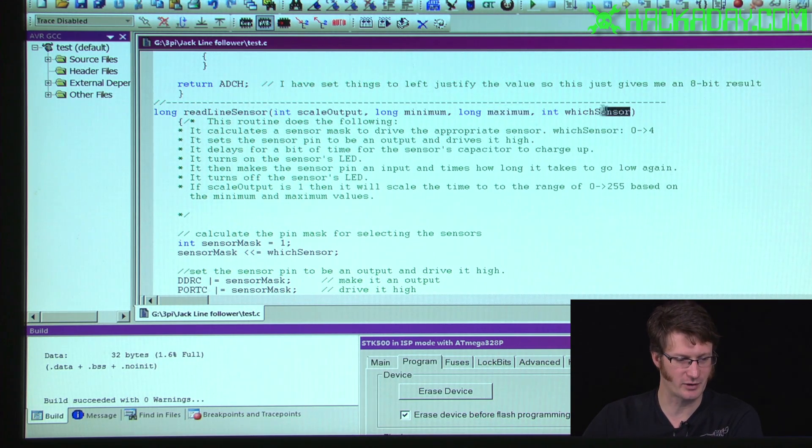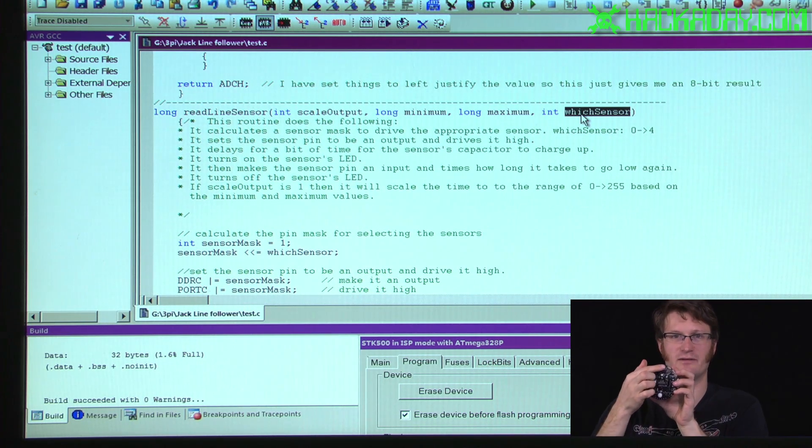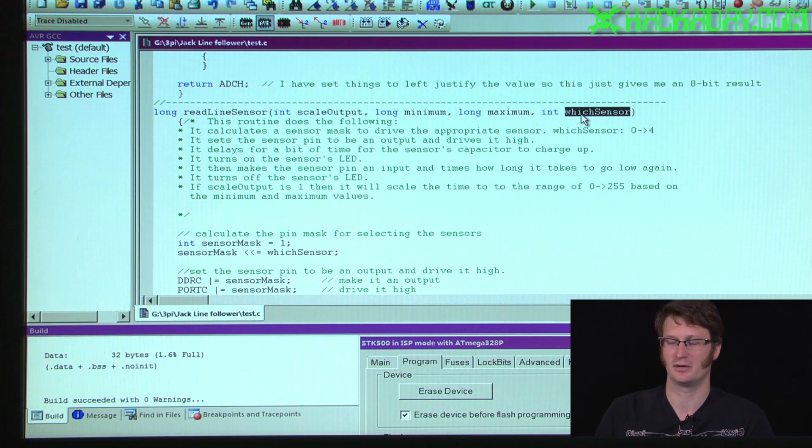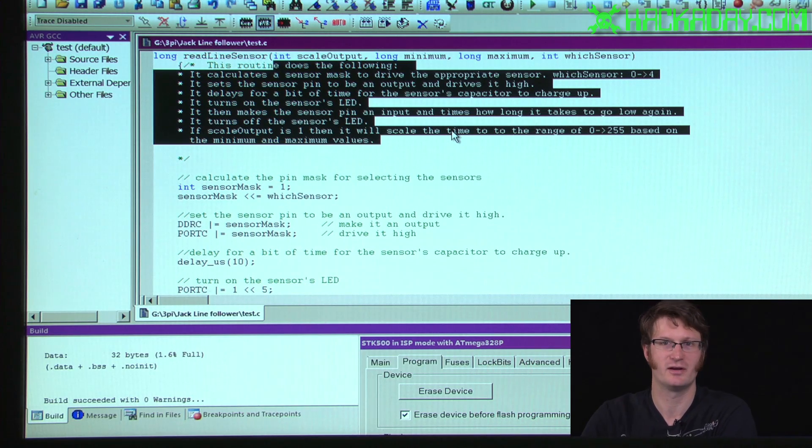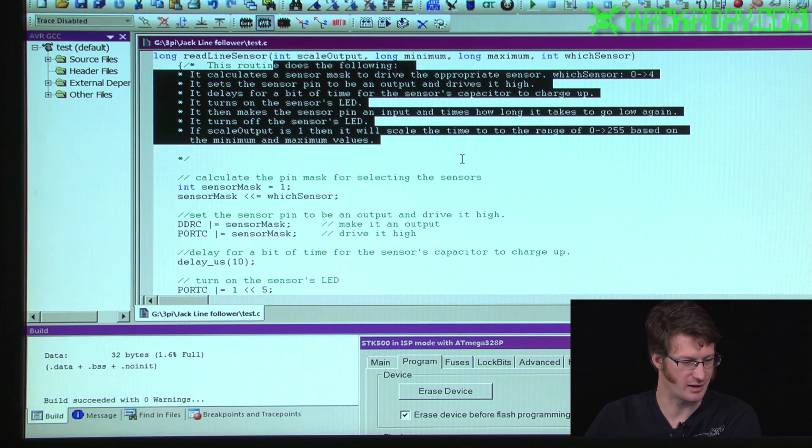And then I have one more argument that says which sensor. And that lets you select which one of these little line sensors you want to read from. I've tried to be pretty liberal with my comments telling you how this works.